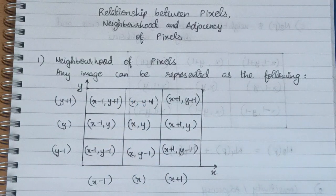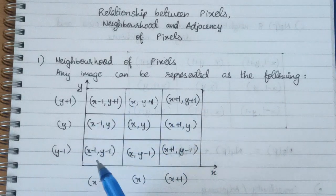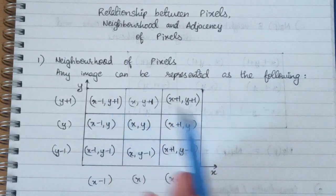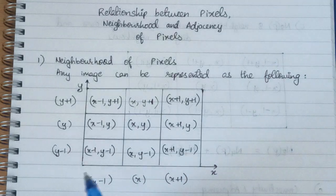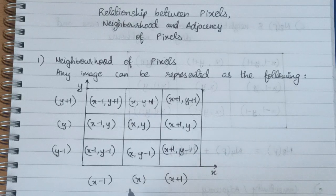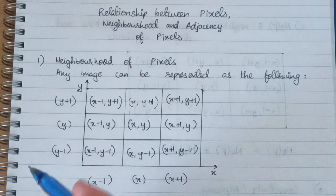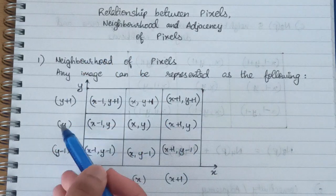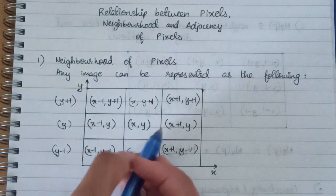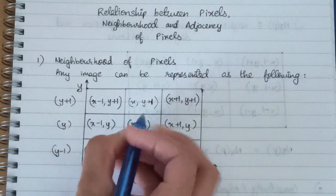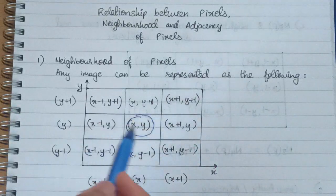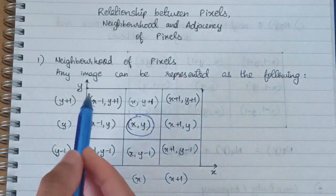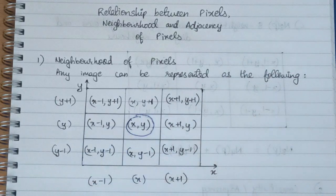First, moving ahead to the neighborhood of pixels — any image we have can be represented with the help of pixels, where these boxes represent pixel values. If we move from left to right, the x value increases. Here we have x-1, x, and x+1. If we move from bottom to top, the y value increases: y-1, y, and y+1. If we consider the center element, each of the other points can be represented with respect to it — this is called the neighborhood of pixels.